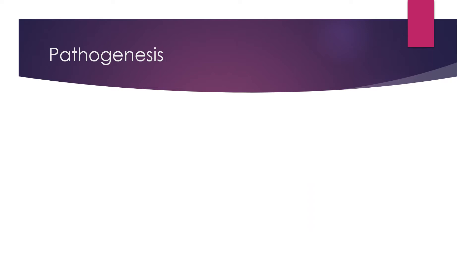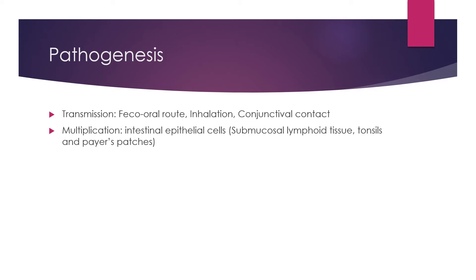Regarding pathogenesis, poliovirus is transmitted by the feco-oral route, followed by the respiratory route — by inhalation — or rarely by conjunctival contact. The virus multiplies in the intestine, in epithelial cells, submucosal lymphoid tissue, tonsils, and Peyer's patches. Viral entry into the host cell is mediated by binding to the CD155 receptor present on the host cell surface.